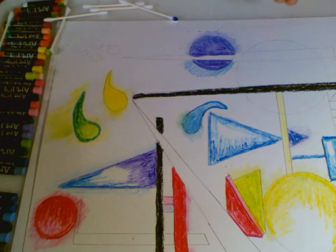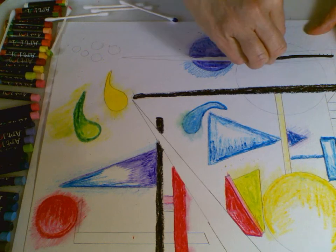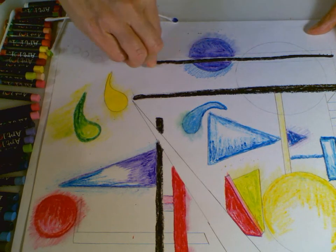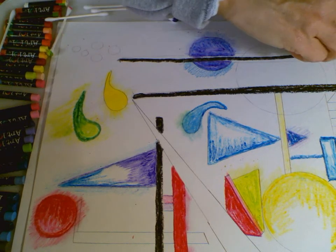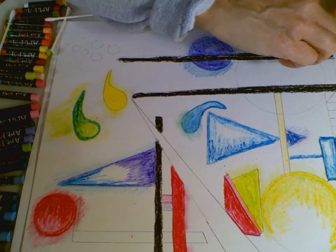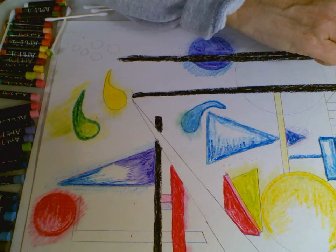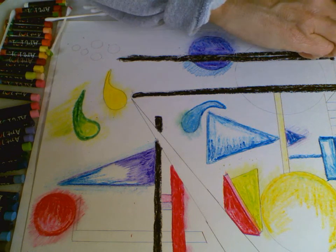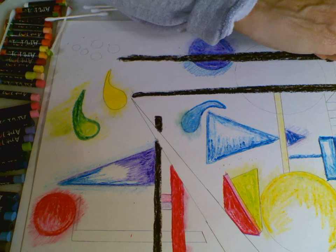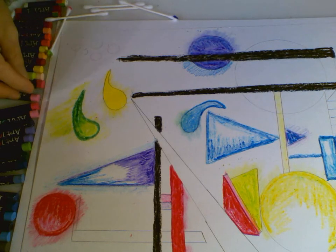His use of black, dark lines through his art almost gave me a feel of drumsticks, or the percussion part of his music that he was listening to. He always had a lot of black lines. Sometimes they were straight. Sometimes they were not.